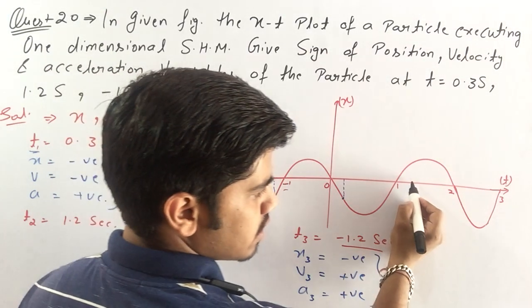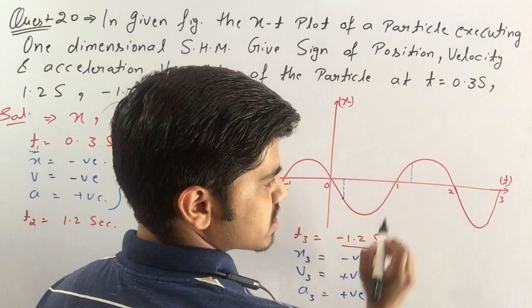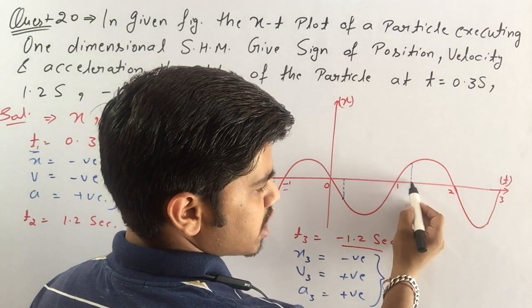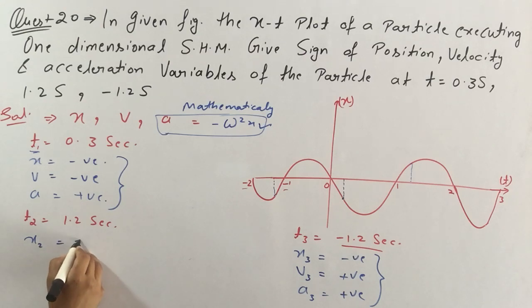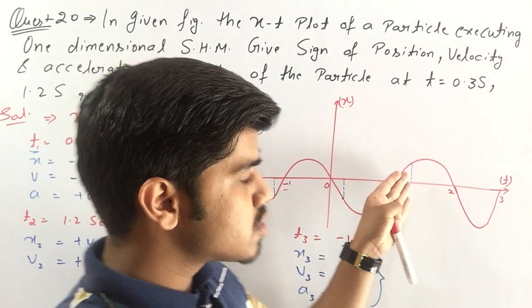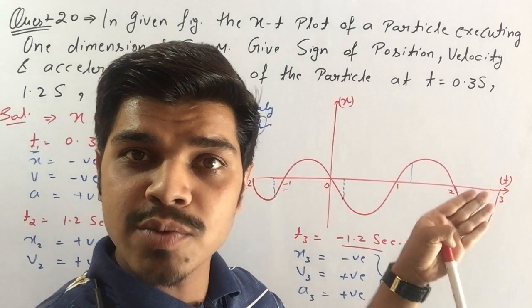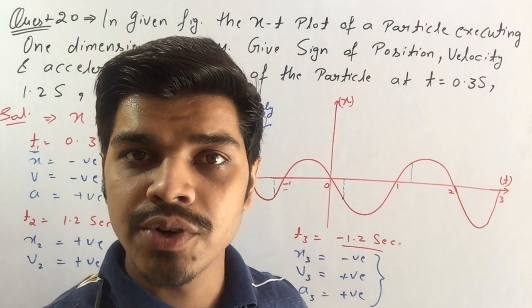At 1.2 second, approximately here x is positive, this point x2 is positive. This time will be positive, this is why velocity will be positive because small change in position and small change in time both are positive.